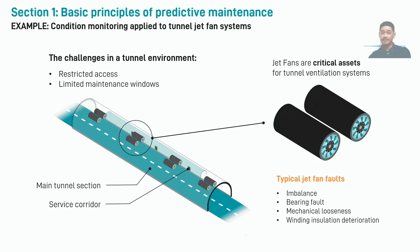A key challenge is limited access and limited maintenance windows. During operation with live traffic, the main tunnel sections are not accessible. This means that we can only perform maintenance during scheduled tunnel closures, and these closures often have to be planned months in advance, with typically a limited window of 12 or so hours. Given that limited window, it highlights the importance of performing targeted maintenance actions on the assets that require the most urgent attention.